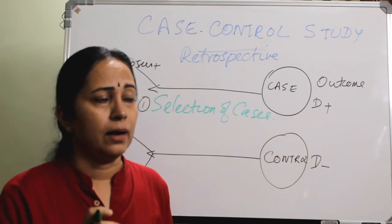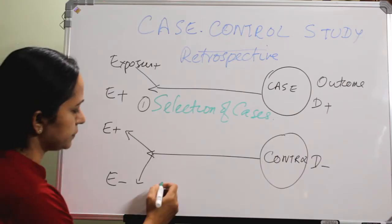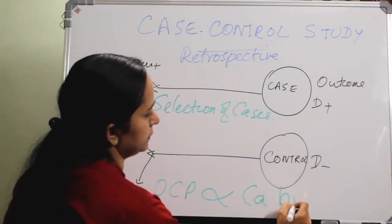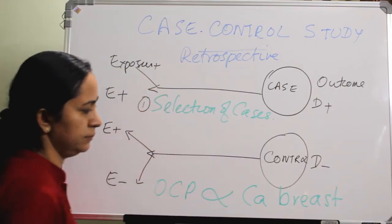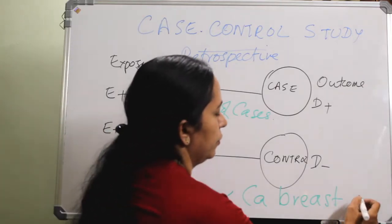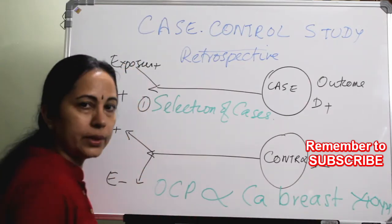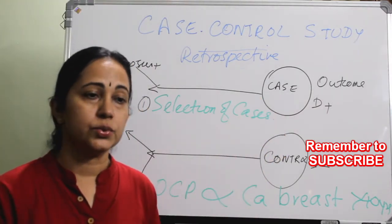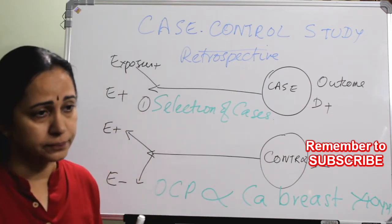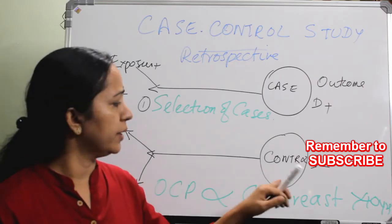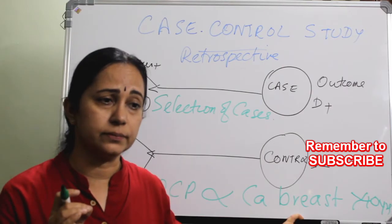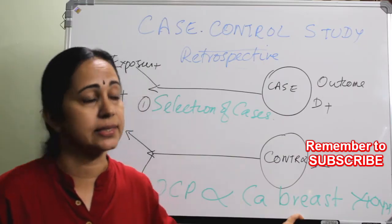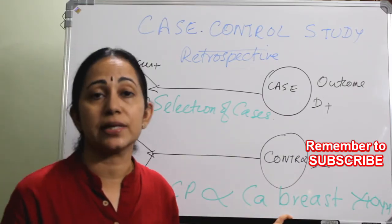For example, I am going to find out an association between oral contraceptive pills and carcinoma breast in females above 40 years of age. So this constitutes the cases. The selection of cases is very important — you have to define how you will select the cases: what are the diagnostic criteria, what are the inclusion criteria, what are the exclusion criteria. These should be clearly defined.